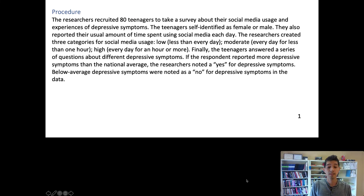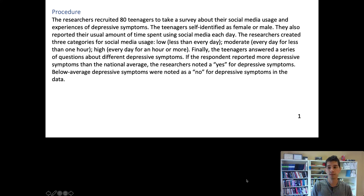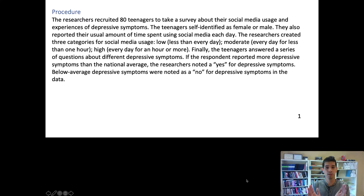The data you'll analyze for the theory challenge comes from 80 teenagers who took a survey about their social media usage and experiences of depression symptoms. The teenagers self-identified as female or male. Teenagers can self-identify as many more genders than just male or female, but because the researchers were interested in the specific gender difference between men and women teenagers, they focused on male and female self-identified teenagers.